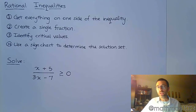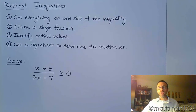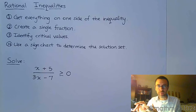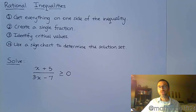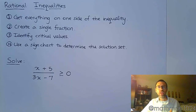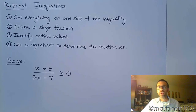Solving rational inequalities is much like solving quadratic inequalities. In a quadratic inequality, you had to get everything to the same side of the inequality so that you had zero on the other side. Then you turned it into an equation, you solved it so that you could find those critical values, and then we would either do test points or do a sign chart to figure out where our solution set was going to be.